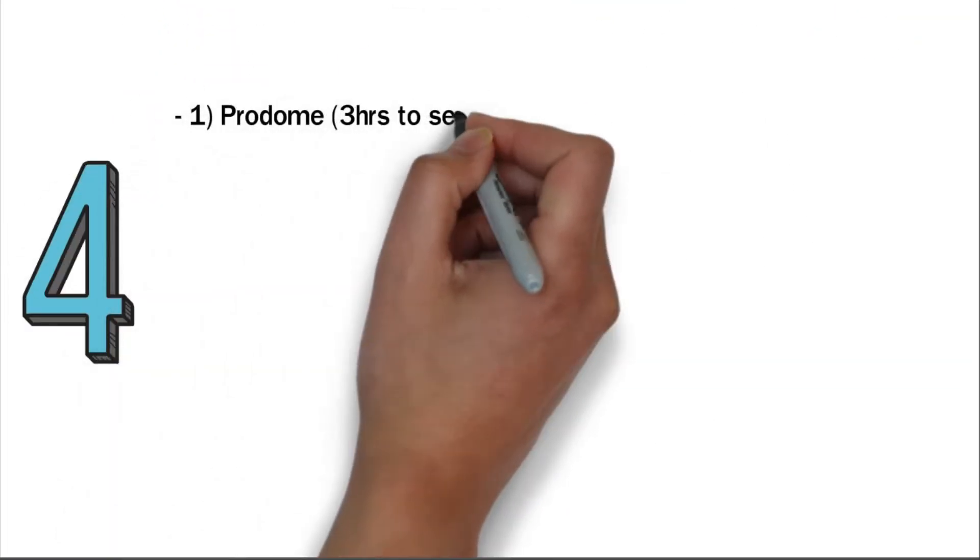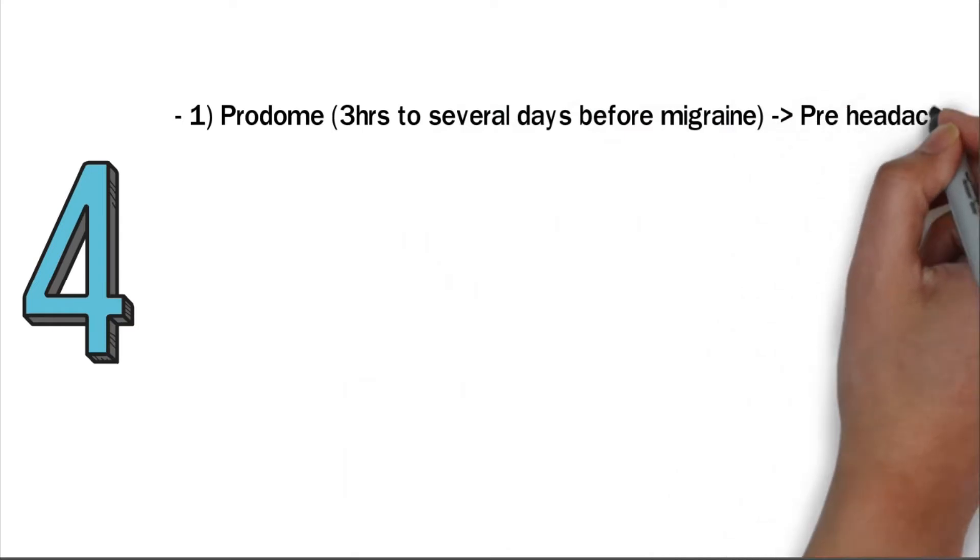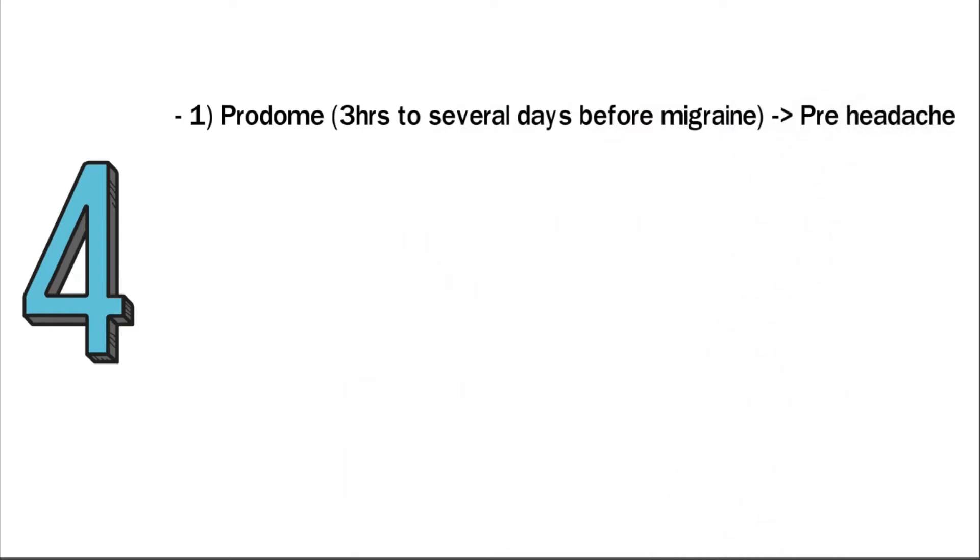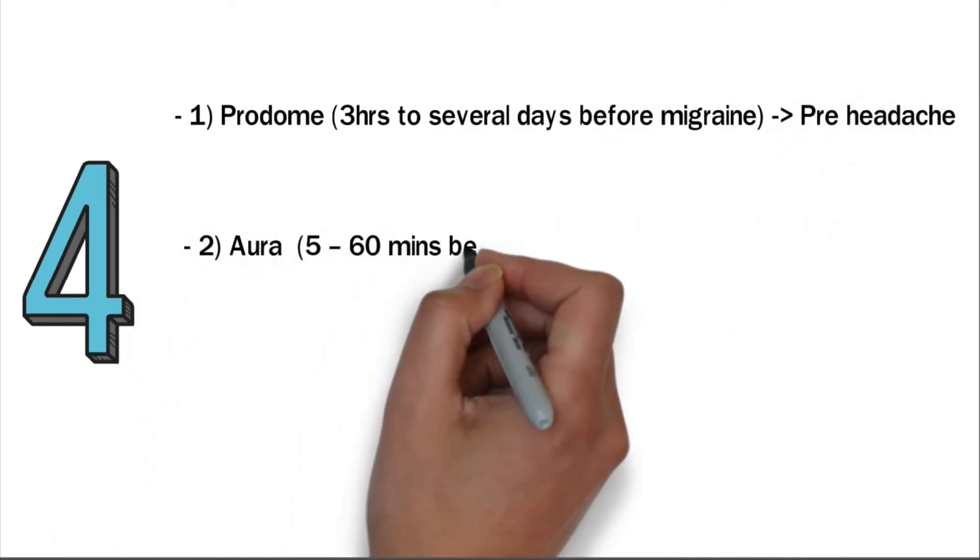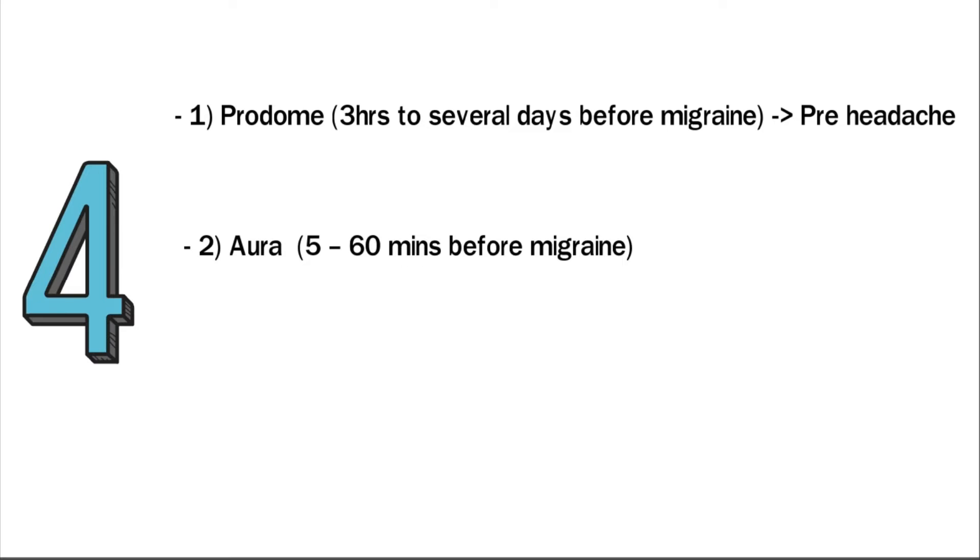There are four phases of migraine. The first is the prodrome, which can occur three hours to several days before the migraine. The second is the aura, which can happen five to 60 minutes before the migraine.